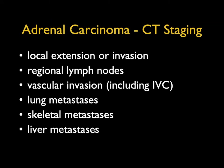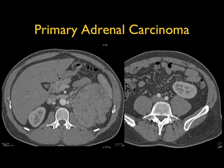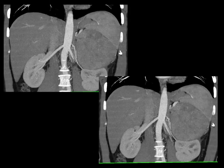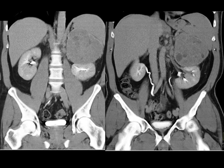On CT we look for staging: local extension, nodes, vascular invasion, lung mets, bone mets, and liver mets. Here's a typical example — a large mass with mottled enhancement. Often they appear well-defined, but that does not mean they're not locally invasive. You can see it pushing on the vein and artery, with mottled enhancement present — you can see why an open procedure is needed. This is very much a classic: you can't look at this and say benign. It's not vascular enough for a pheo.